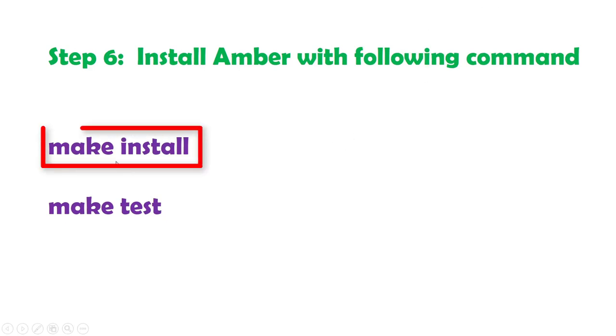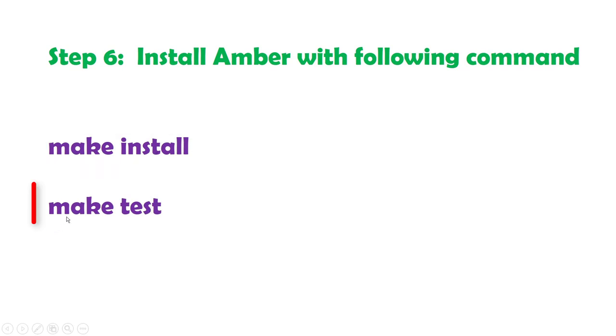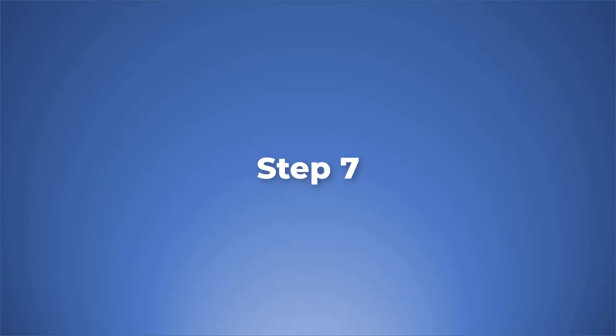In the sixth step we will install AMBER with the following two commands. The first command is: make install, and then the next command is: make test. Let's do it.